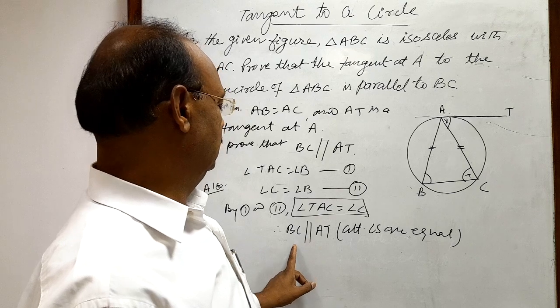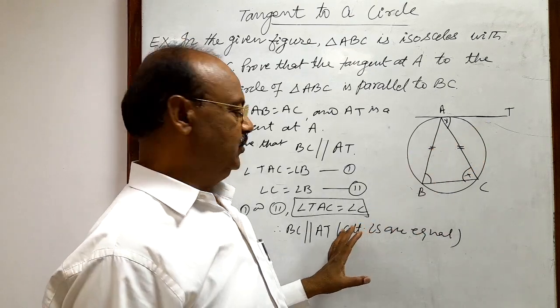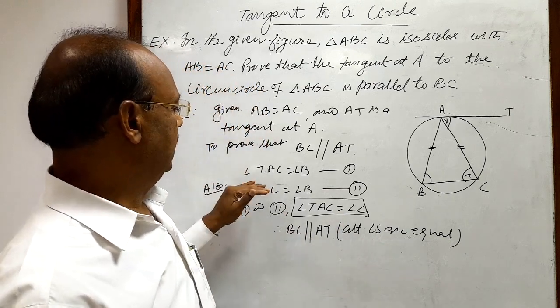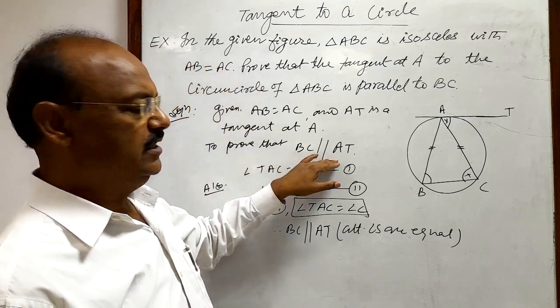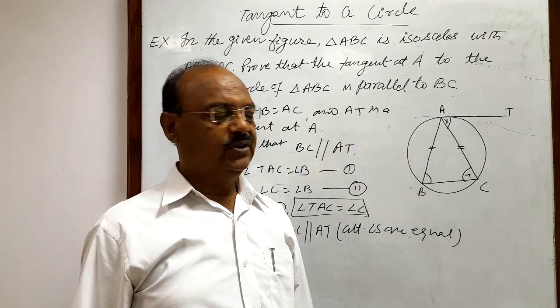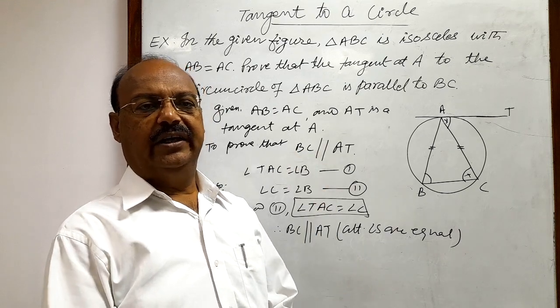angle TAC and this angle C are equal. So these two lines BC and AT are parallel. So it has been now proved. We are required to prove this condition only that BC is parallel to AT. Very simple and interesting question. So we will see some more problems from the same topic tangent to a circle in other videos.